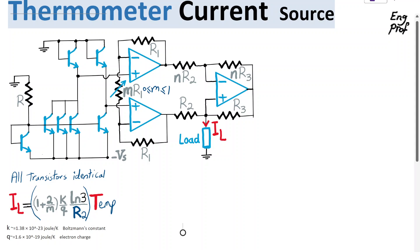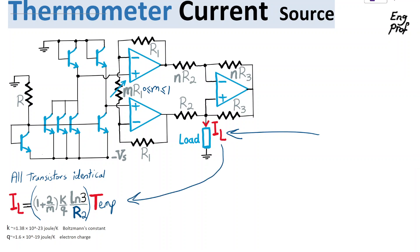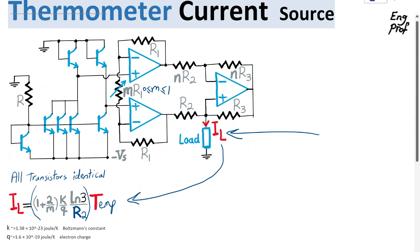In the thermometer current source shown in the circuit, we want to show that the output current IL is proportional to temperature observed by the junction of these BJT transistors in the current mirror.